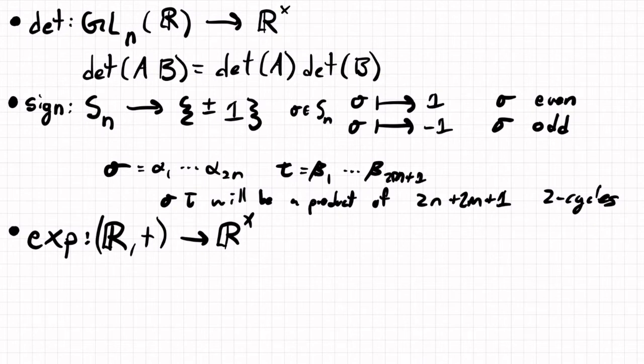So that's r with the addition as its operator to r cross. I'll write it with the parentheses here just to not confuse us with the positive real numbers. And so why is this a homomorphism? It's because e to the a plus b equals e to the a, e to the b. So raising by e gives you homomorphism from the additive group to the multiplicative group.